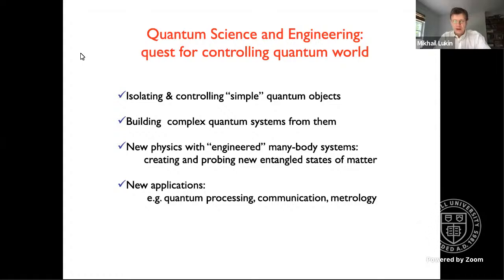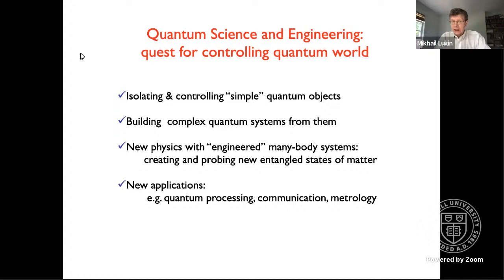What I will tell you is part of the worldwide effort now, which I sometimes call a quest for controlling the quantum world. In this quest, what we're trying to do is isolate and control simple quantum objects like single electrons, single spins, or single atoms in our case, and then build more and more complex systems from them. We hope to explore new physics by creating and probing new entangled quantum states of matter, and also explore applications such as quantum processing, communication, and metrology.